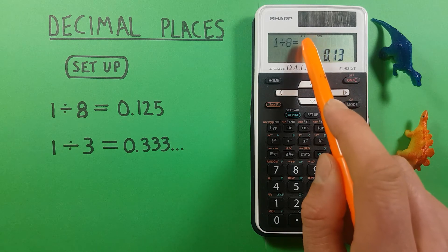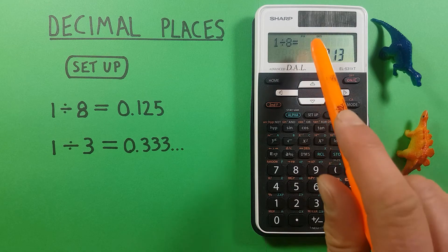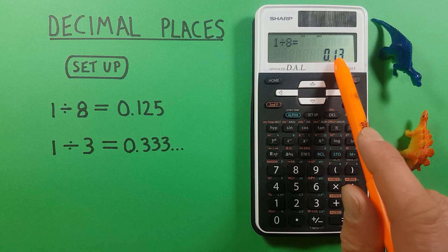You'll also see the word fix appear at the top of the screen. This is telling us our calculator is in fix mode so if you do see that be careful with any answers you get because they may be rounded.